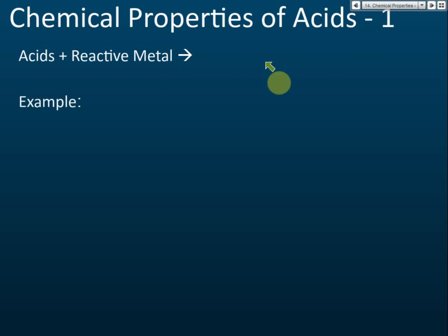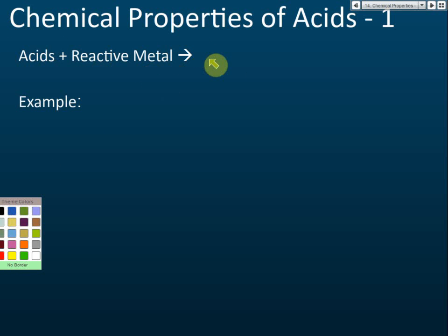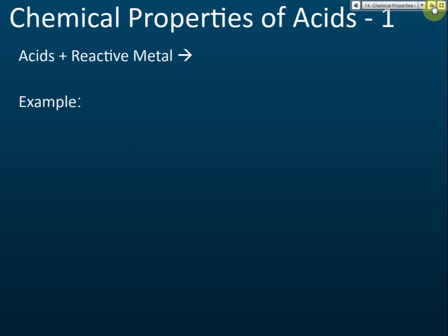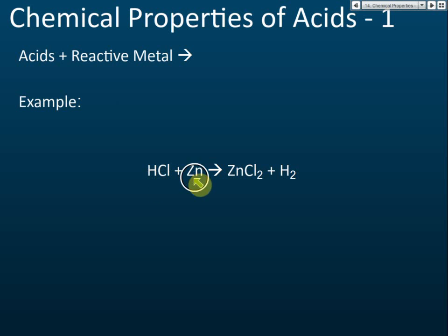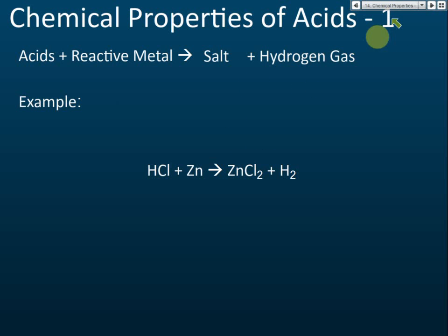Acid reacting with reactive metals produces salt and hydrogen gas. For example, hydrochloric acid reacts with zinc — zinc is a reactive metal — and it produces salt and hydrogen gas.